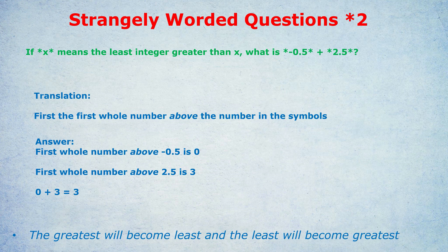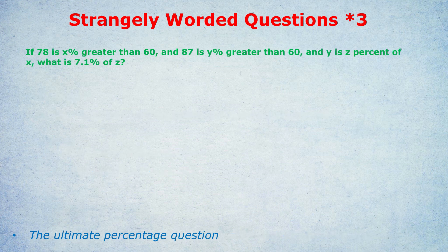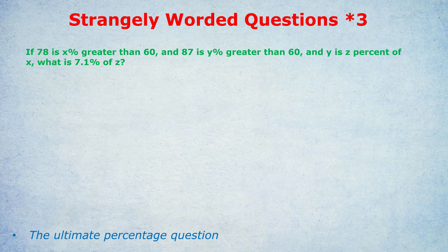So read slowly. Try to start from the back if you're still confused. One final chance. Because now we have another strangely worded question which will freak out a lot of students. This time, it's on percentages. If 78 is X percent greater than 60 and 87 is Y percent greater than 60 and Y is Z percent of X, what is 7.1 percent of Z?